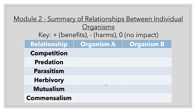Go ahead and pause the video and see if you can fill out the table. Using the key, you have two organisms — put a plus with the one that benefits, a minus with the one that's harmed, and a zero where there's no impact. Draw this table in your notebook and attempt to fill it out, then pause and do that because this is a great review for the test.